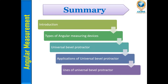Summary: We discussed the introduction to angles — where two lines combine at a single point. We studied the types of angular measuring devices: plain protractor, universal bevel protractor, clinometer, angle gauges, and spirit level. The purpose of the universal bevel protractor compared to a normal protractor is that it can measure below one degree, providing greater accuracy when needed.